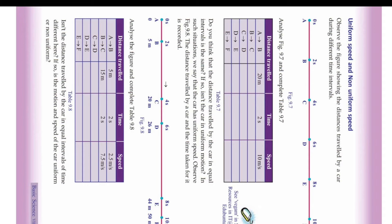Now observe the next figure — there is also a car moving, but the distance travelled is different each interval: A to B is 5 meters, B to C is 15 meters, C to D is 6 meters, D to E is 18 meters, and E to F is 6 meters. The distance travelled is different, but the time interval is the same — 2 seconds.